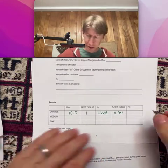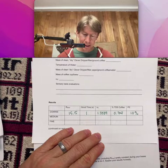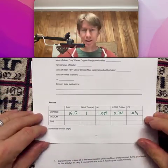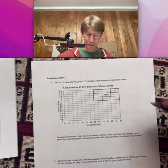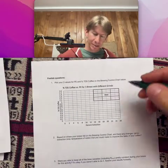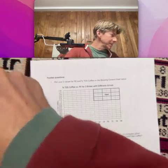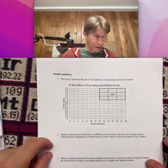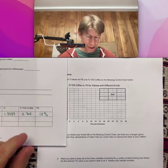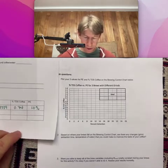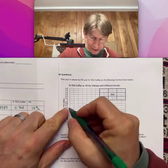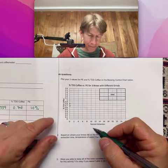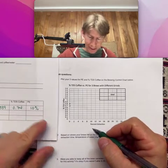And I also want you to plot these values in for post-lab question number one. Plot them in this table. So my first one was 0.74. So there's 0.7 and then 0.8, so I'm about a little less than halfway there. And 10%.